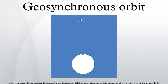A geostationary orbit is a circular geosynchronous orbit in the plane of the Earth's equator with a radius of approximately 42,164 km. A satellite in such an orbit is at an altitude of approximately 35,786 km above mean sea level. It maintains the same position relative to the Earth's surface. If one could see a satellite in geostationary orbit, it would appear to hover at the same point in the sky — not exhibit diurnal motion — while the Sun, Moon, and stars would traverse the heavens behind it.